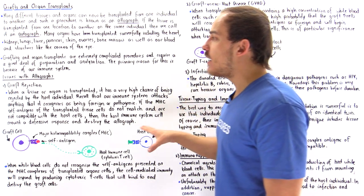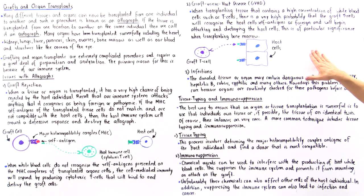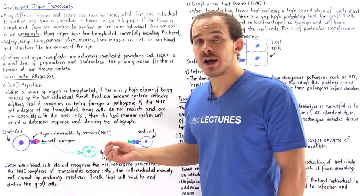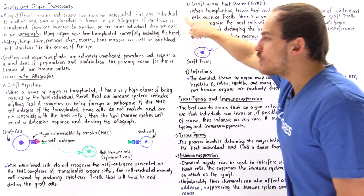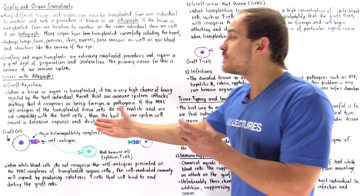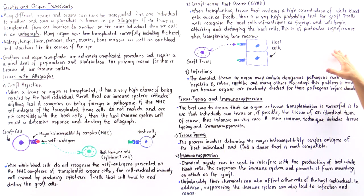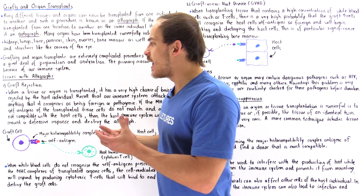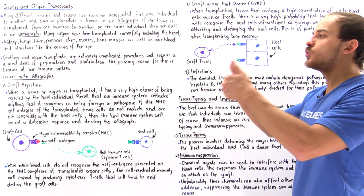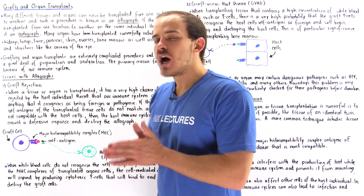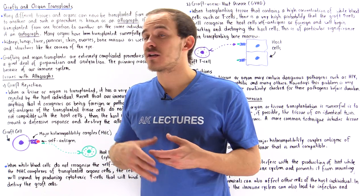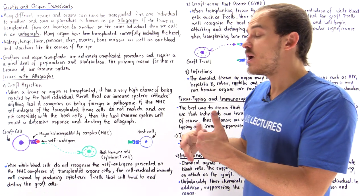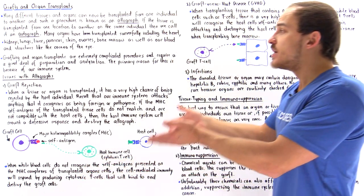The major problem in transplantation is the host immune system destroying the transplanted tissue or organ. Another important complication is the opposite: graft versus host disease, or GVHD. This occurs when transplanting tissue or an organ that contains a high concentration of T cells — one example being bone marrow.